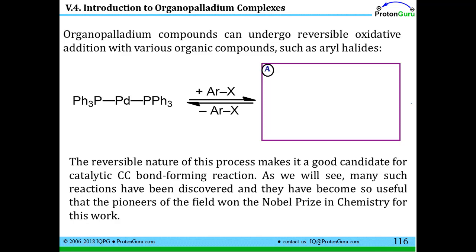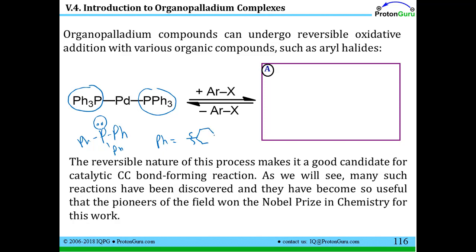This is a palladium compound that has some ligands on it — these are neutral phosphine ligands. If you drew one of these out it would look like this: phosphorus with three phenyl groups. Phenyl is the abbreviation for benzene when used as a substituent, so if you haven't covered benzene compounds yet, it looks like that. The lone pair on the phosphorus is attracted to the palladium.